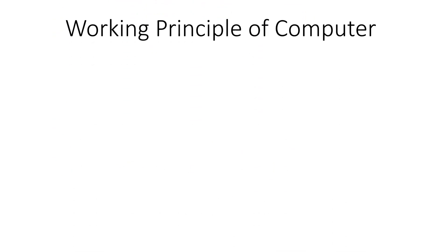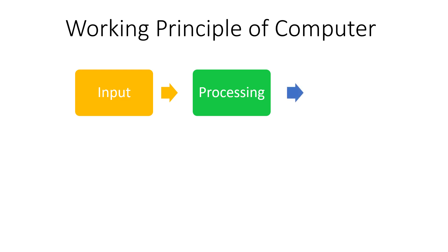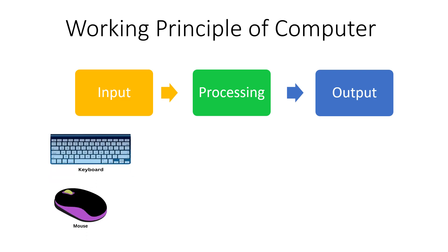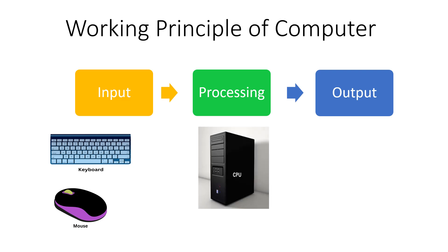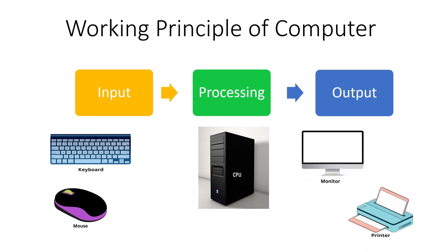Now let me tell you about the working principle of computer. Our computer's working principle is IPO, where I stands for Input, P for Processing, and O for Output. So in these three steps our computer system works. Initially, our computer receives input from input devices like keyboard and mouse; those inputs are processed by the CPU and a result is generated, which is displayed as output on the monitor, printed on the printer, or given as audio output through the speaker.